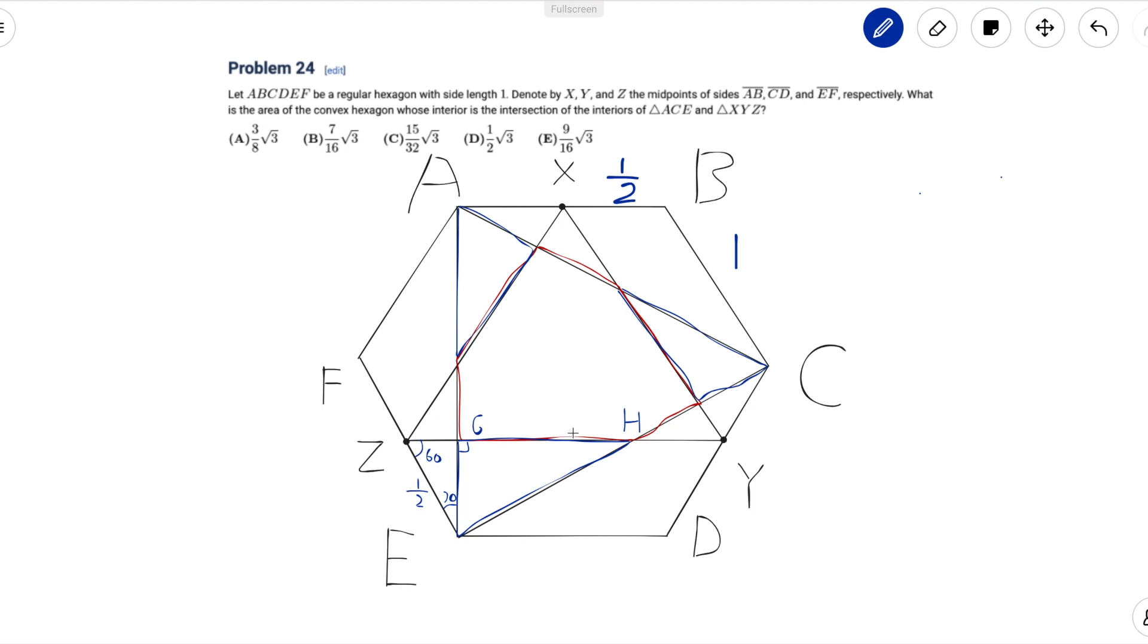Now that we've found this we can use the fact that ZE is 1 half because Z is a midpoint of EF to find that since ZGE is a 30-60-90 triangle, GE is just root 3 over 4. And since ACE is an equilateral triangle we get angle AEC is 60 degrees.